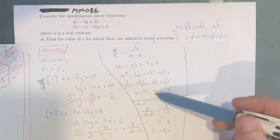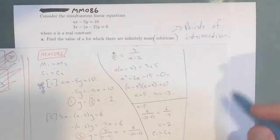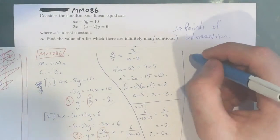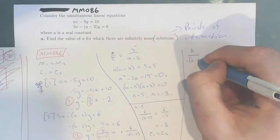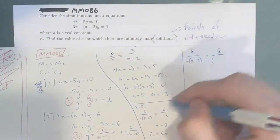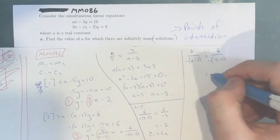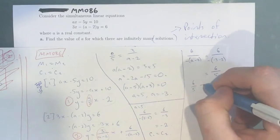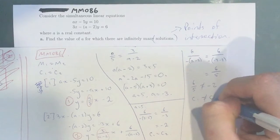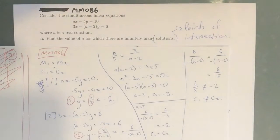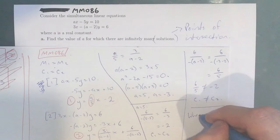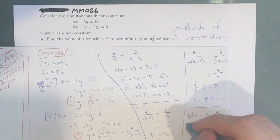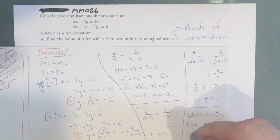We still need to test if A equals negative 3 would work as well — my hunch is that it won't, but we need to test it. So, 6 over negative(negative 3 minus 2) equals 6 over negative(negative 5), which equals 6 over positive 5. Since 6/5 does not equal negative 2, C1 does not equal C2. Therefore our final answer is: when A equals 5, there are infinitely many solutions.